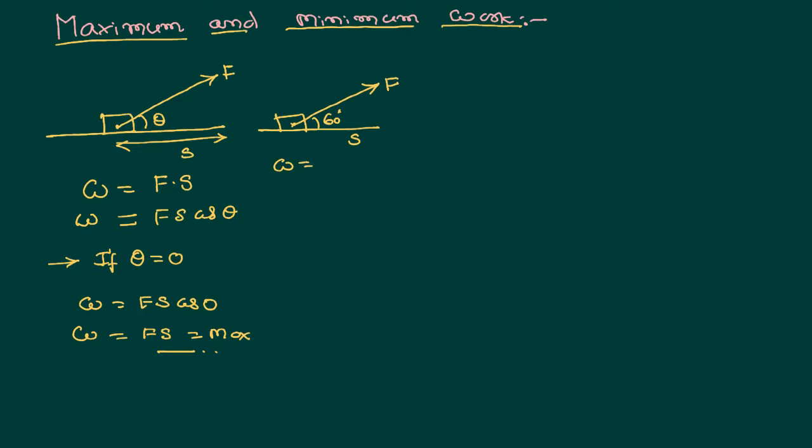Then what happens to the work done? Work done is equal to Fs cos 60. We know cos 60 equals half, so it is only half of Fs.